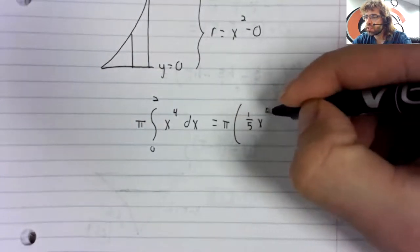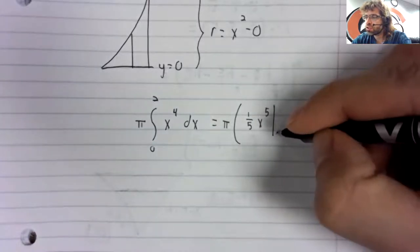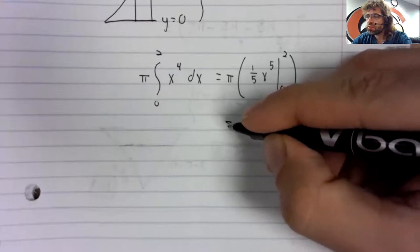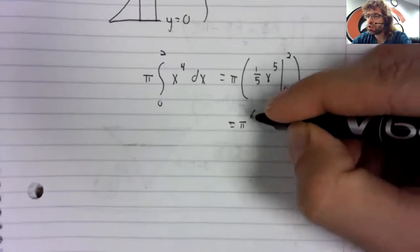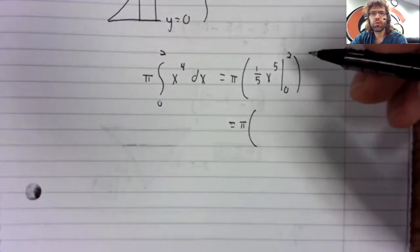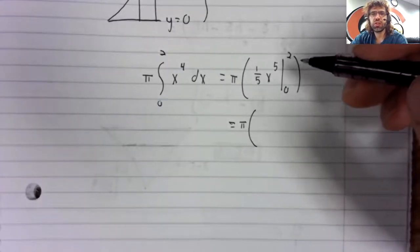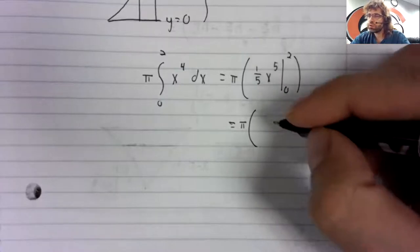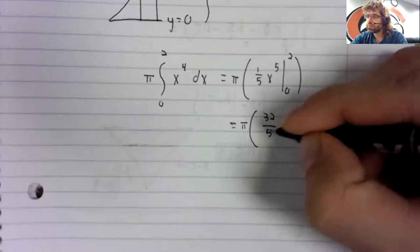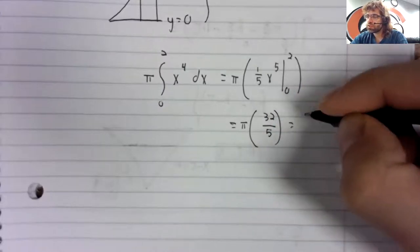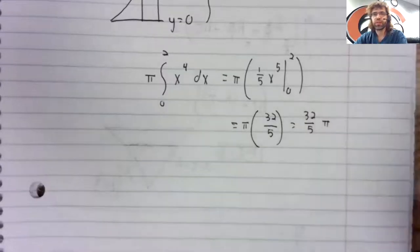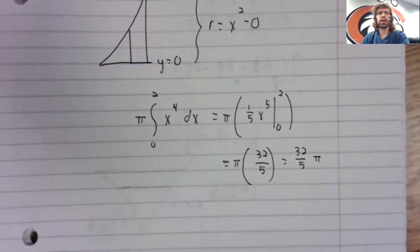We can anti-differentiate. Let me see, stick zero in. We get zero. Two, two, four, eight, 16, 32. So I make this 32 fifths times pi.